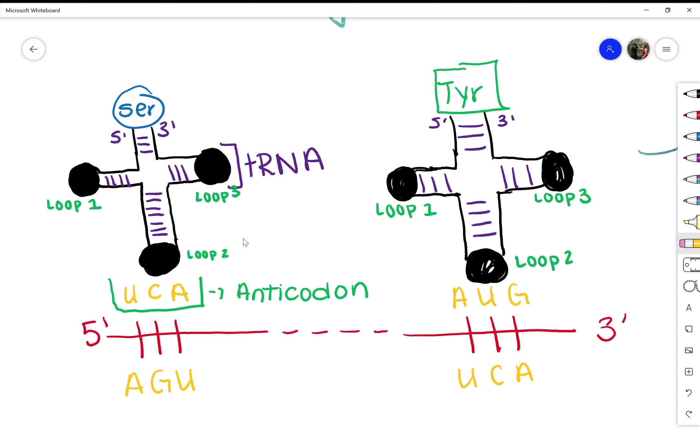On loop 3 is where the tRNA is, and I have that highlighted. On loop 2 is where the anticodon matches with the mRNA sequence. In this example, we have UCA matching to AGU, and then on the right, we have AUG matching to UCA.